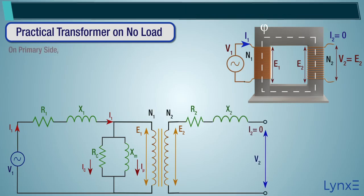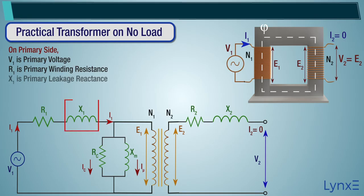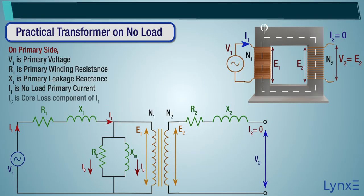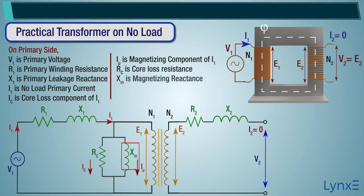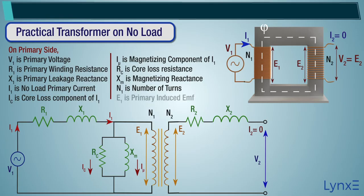We can represent the transformer on no load condition with its equivalent circuit diagram. On the primary side: V1 is primary voltage, R1 is primary winding resistance, X1 is primary leakage reactance, I1 is no load primary current, IC is core loss component of I1, I mu is magnetizing component of I1, IC is core loss resistance, XM is magnetizing reactance, N1 is number of turns in primary winding, and E1 is primary induced EMF.